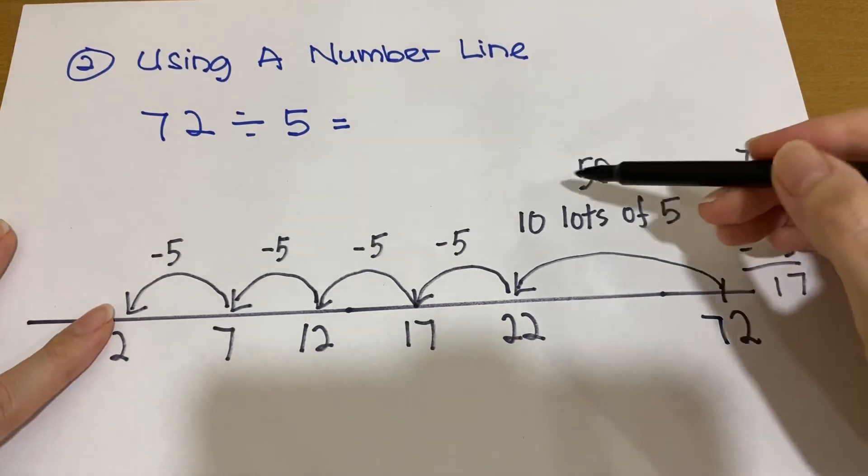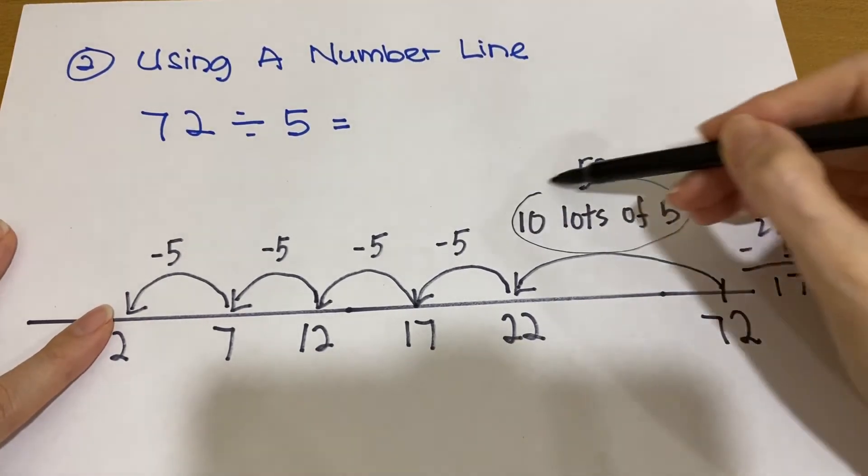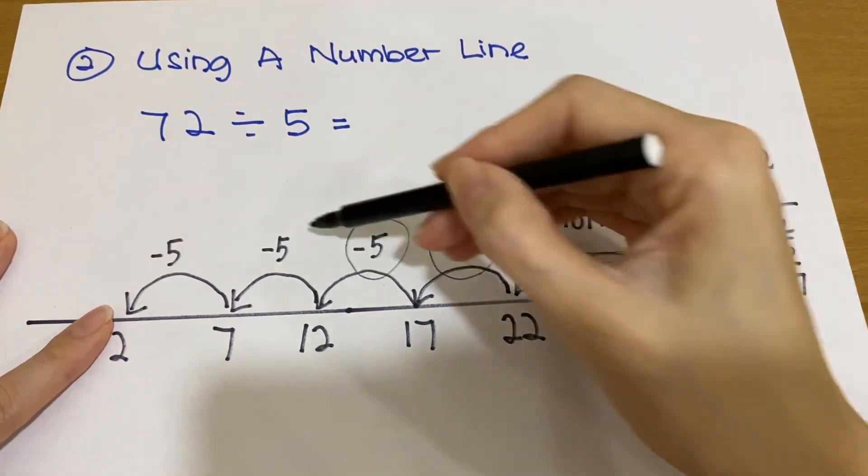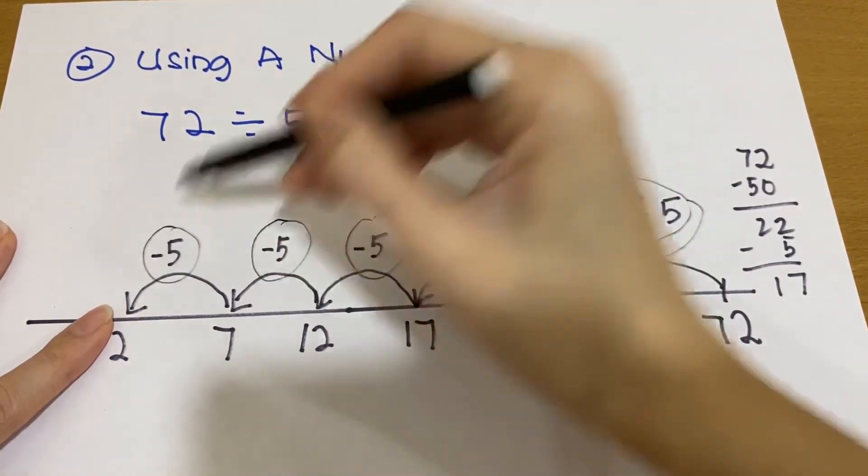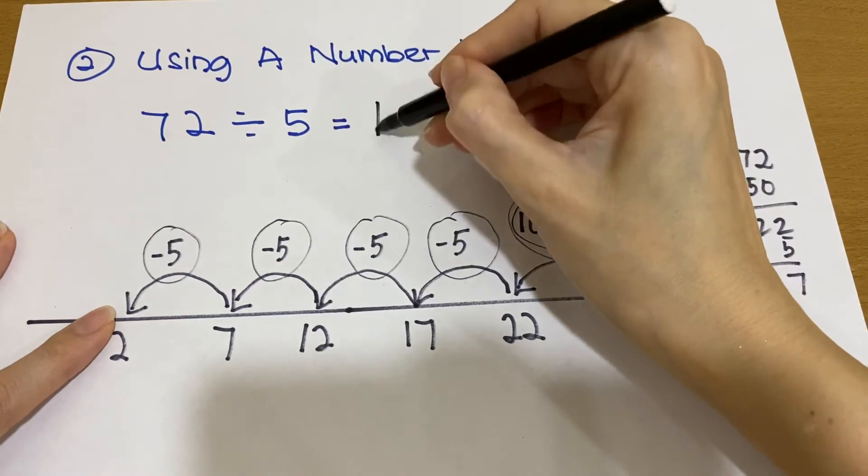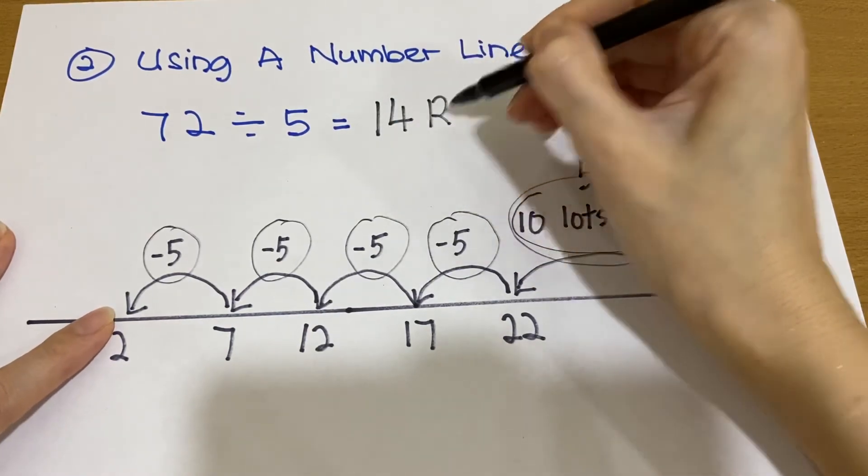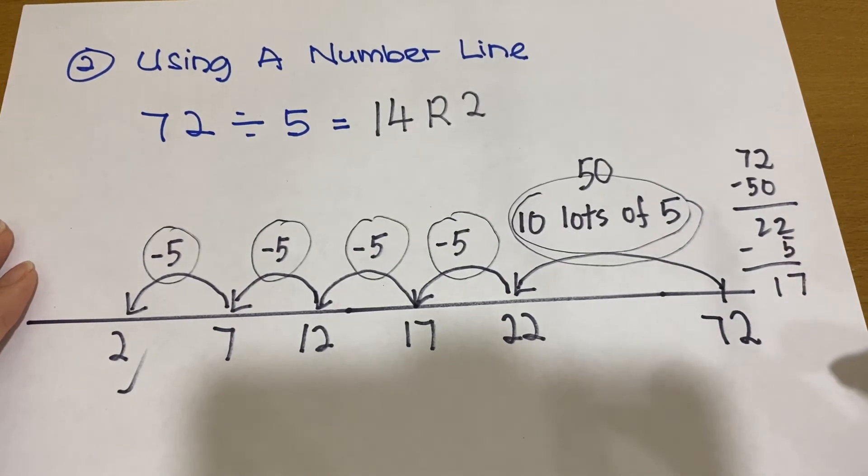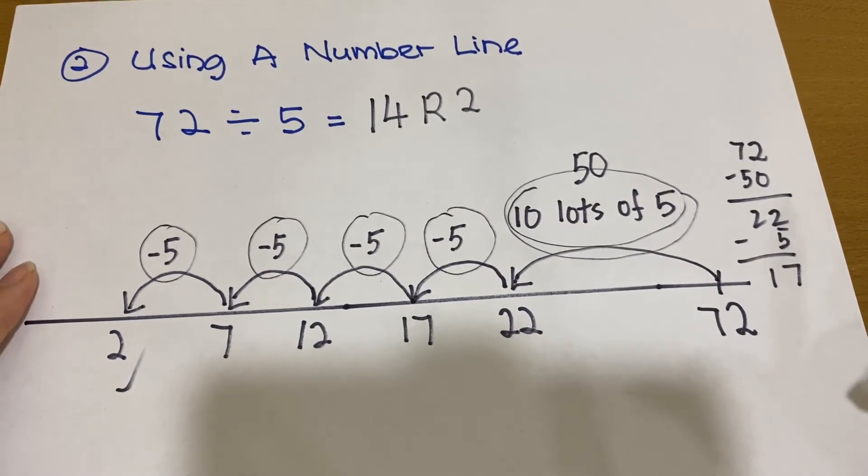So if you look here, we have 10 lots of 5. 11, 12, 13, 14. So you will know the answer will be 14 with the remainder 2. This is the second step to do division using a number line.